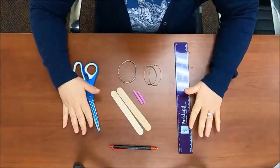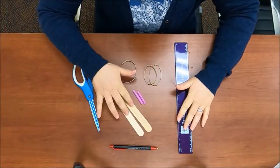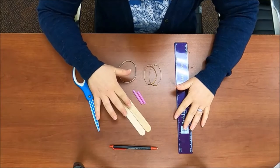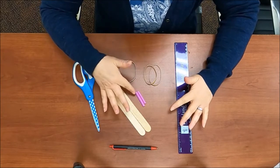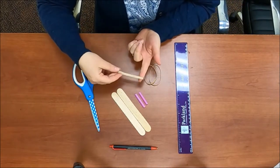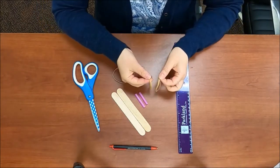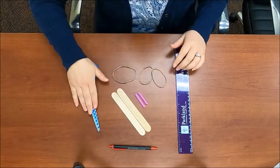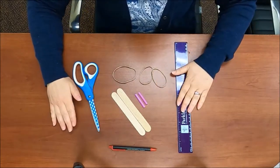Alright, for this experiment you're going to need two jumbo craft sticks, or a straw, I've already cut mine into two little pieces, a thick rubber band, and two thinner rubber bands, some scissors, a pen, and a ruler.